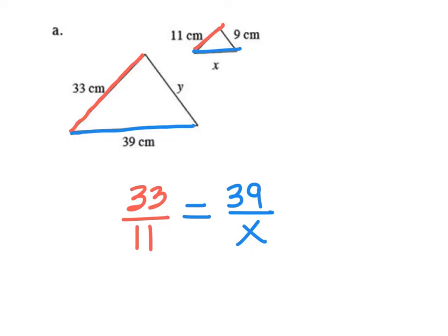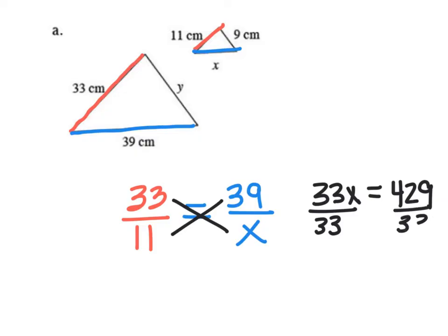And now I'm going to use a proportion to solve it. So if you have your calculator, you can go ahead and grab that. And you are going to do 33 times X, which is 33X, equals 11 times 39, which is 429. Then you have one more step here. You're going to divide by 33.